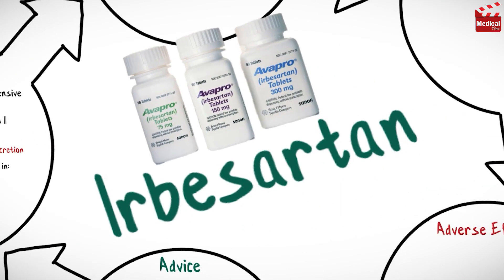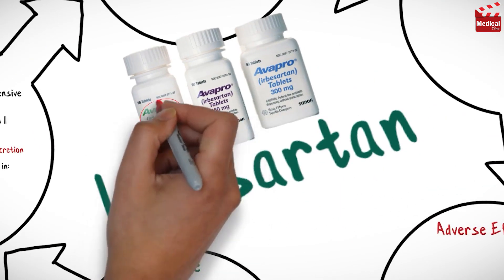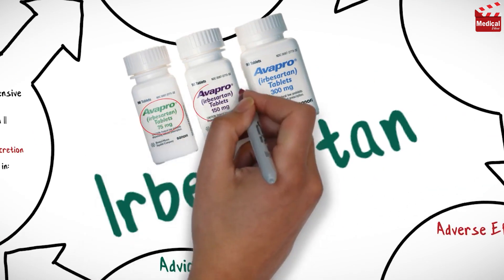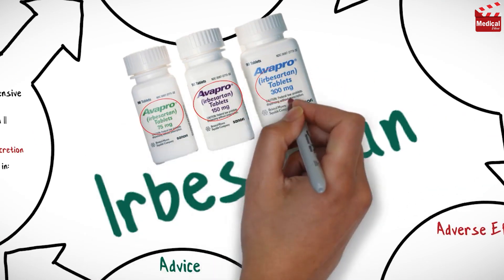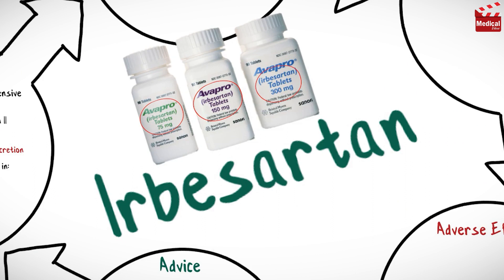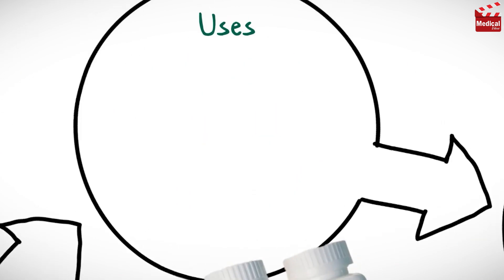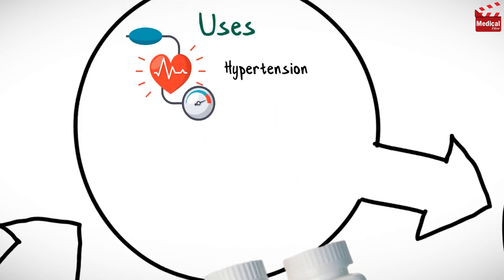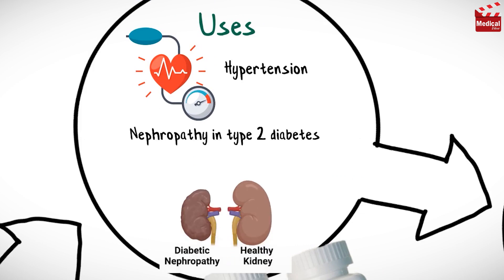It is available as 75mg, 150mg, and 300mg tablets. Irbesartan is used in the treatment of hypertension and for nephropathy in type 2 diabetes.